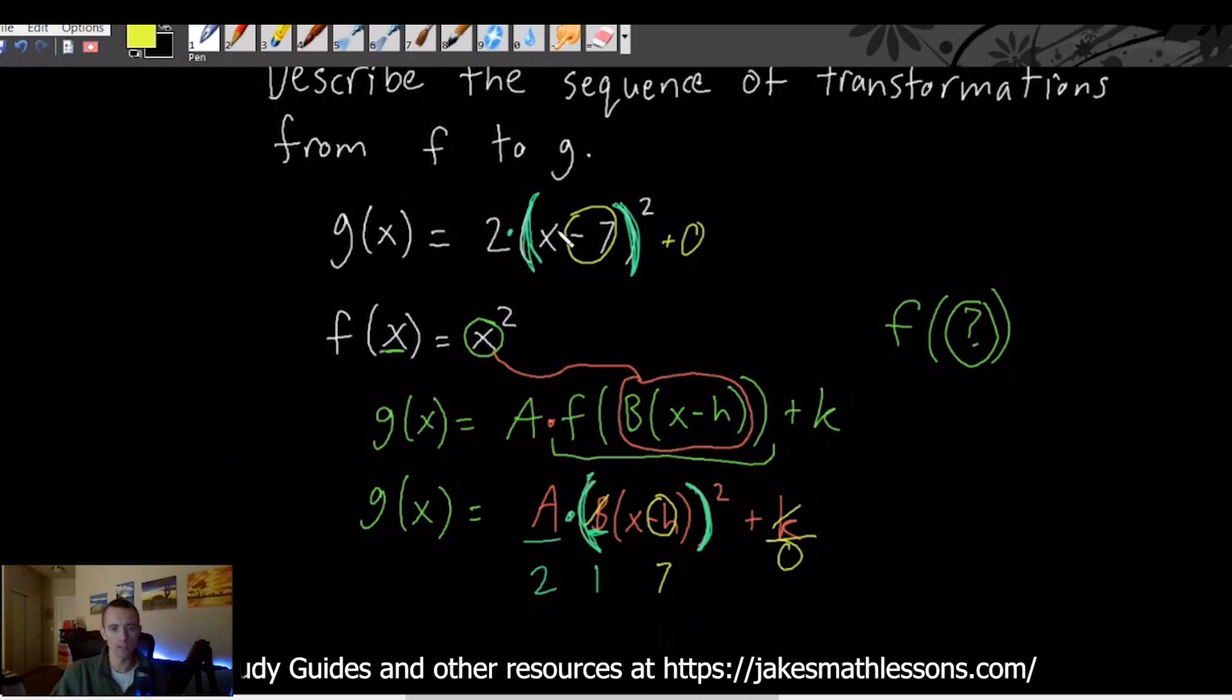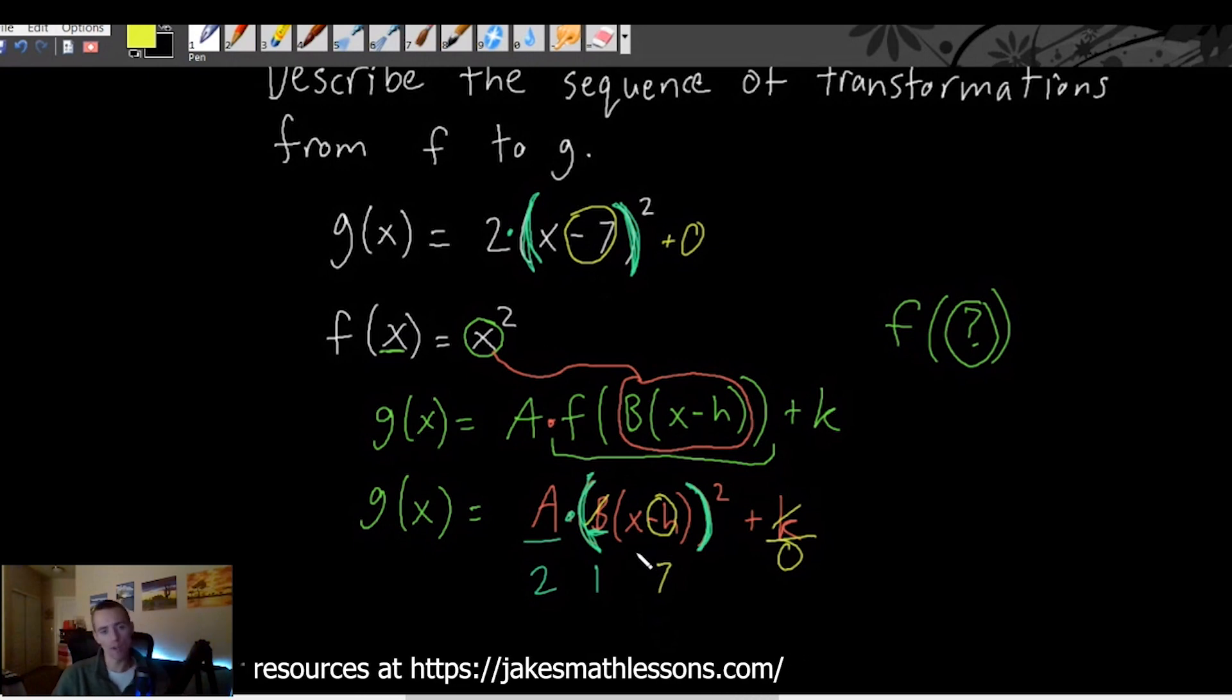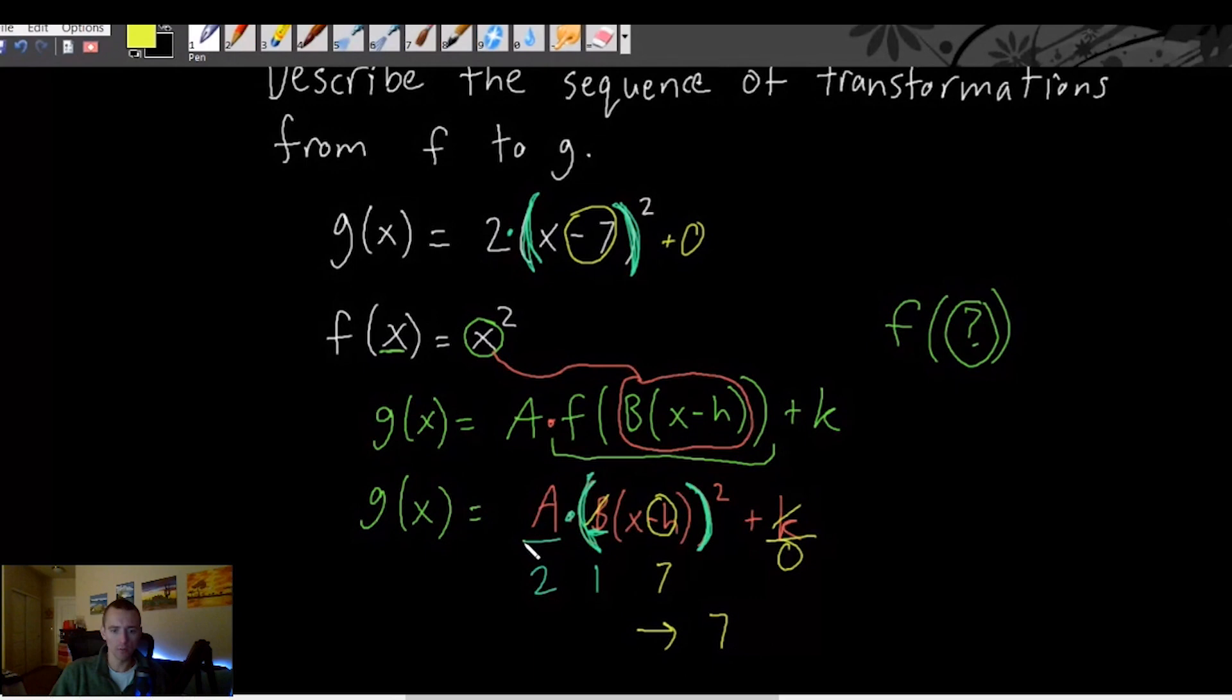So that tells us since we have x minus 7 we're going to be shifting to the right in the positive x direction. Remember the h and the B kind of behave opposite of how you'd expect them to. So we're going to move to the right 7 units and we are also going to be stretching by a factor of 2 in the vertical direction. So we're going to stretch vertically by a factor of 2.